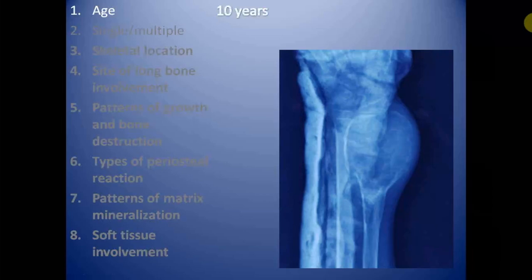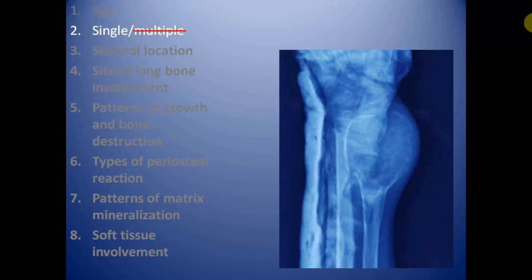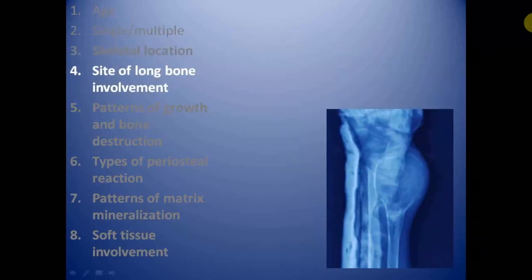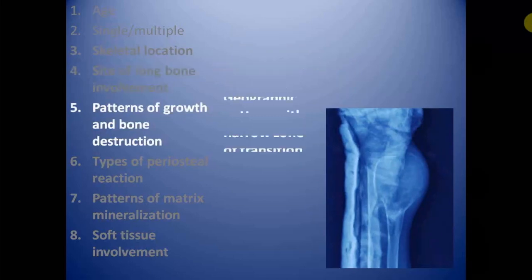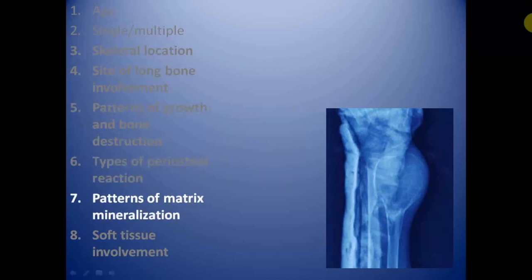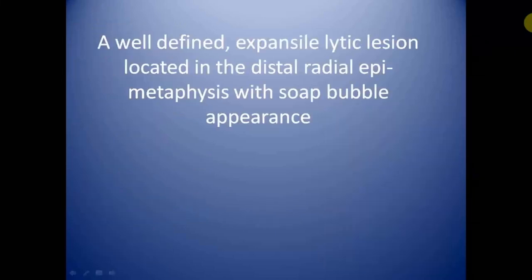Age of the patient is 10 years — a young child. The lesion is single, involving the distal end of the radius. Skeletal location is appendicular, involving a long bone. The lesion involves the epiphyseal and metaphyseal region of the distal radius and is expansile in nature. It shows a geographic pattern of bone destruction with a narrow zone of transition. The periosteal reaction is non-aggressive. There is no obvious cartilaginous or osseous matrix, but there is a typical soap bubble internal appearance. There is no obvious soft tissue involvement.